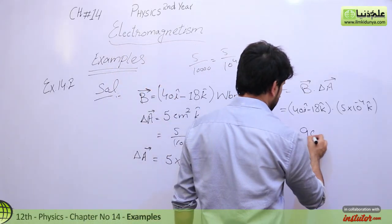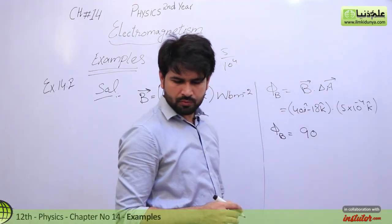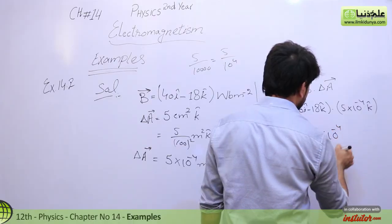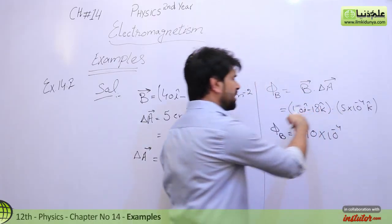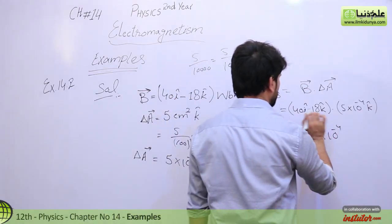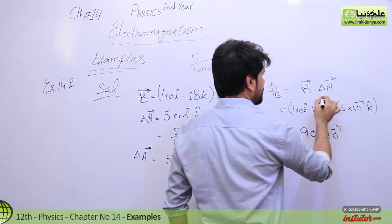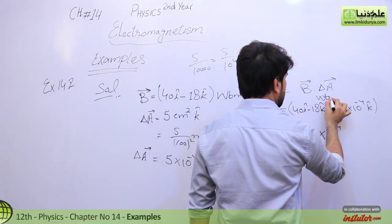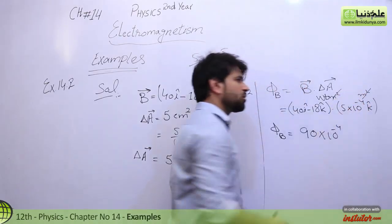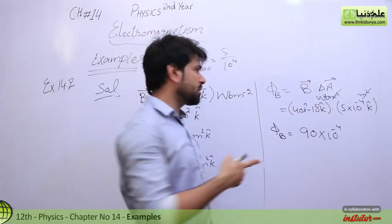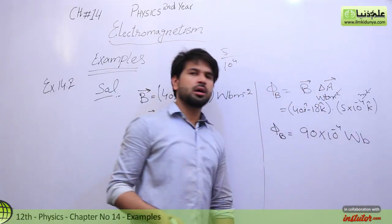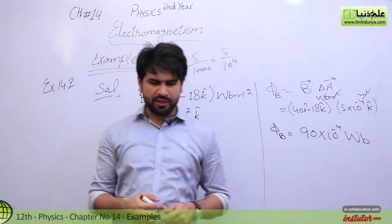The flux is a scalar quantity, so the result carries a minus sign. The answer is minus 18 multiplied by 5 times 10 to the power minus 4. The unit is Weber per meter square multiplied by meter square, so meter square cancels and the unit is Weber — the unit of magnetic flux.